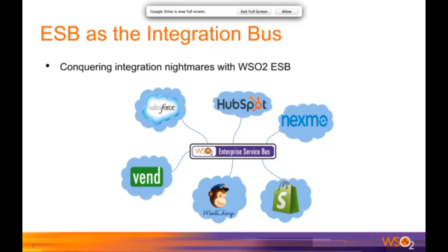WSO2 ESB eliminates the complexities of point-to-point integration and integrates all disparate systems with a bus architecture. ESB is designed as the middleware layer that enables interoperability among heterogeneous systems and services using the SOA model.